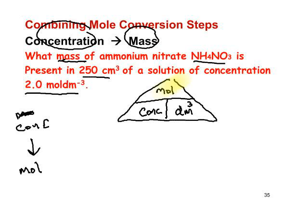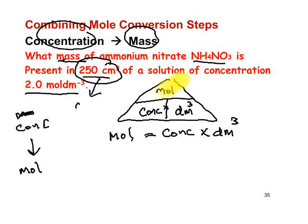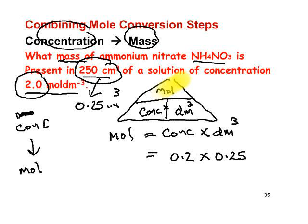The rule for the rearrangement triangle is to cover what you want and read off what is left. This time I need moles. The line between the bottom two quantities is taken to be a multiply sign, so moles equals concentration times cubic decimetres. 250 cubic centimetres divided by 1,000 gives 0.25 cubic decimetres. The concentration is 2.0, so moles equals 2.0 times 0.25, which comes out to be 0.05 mol.